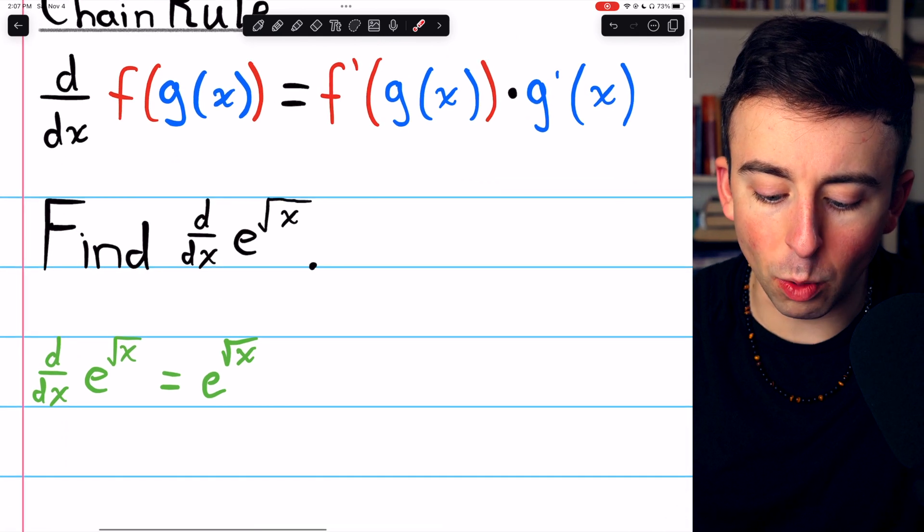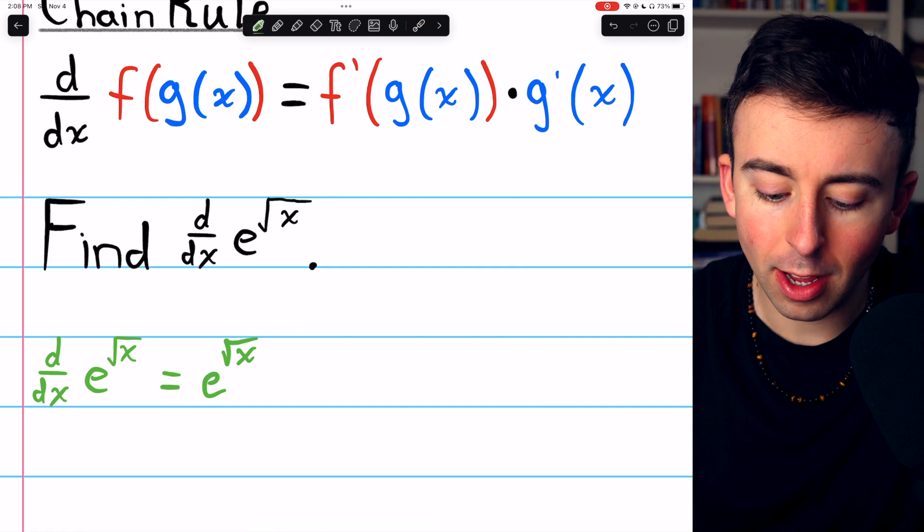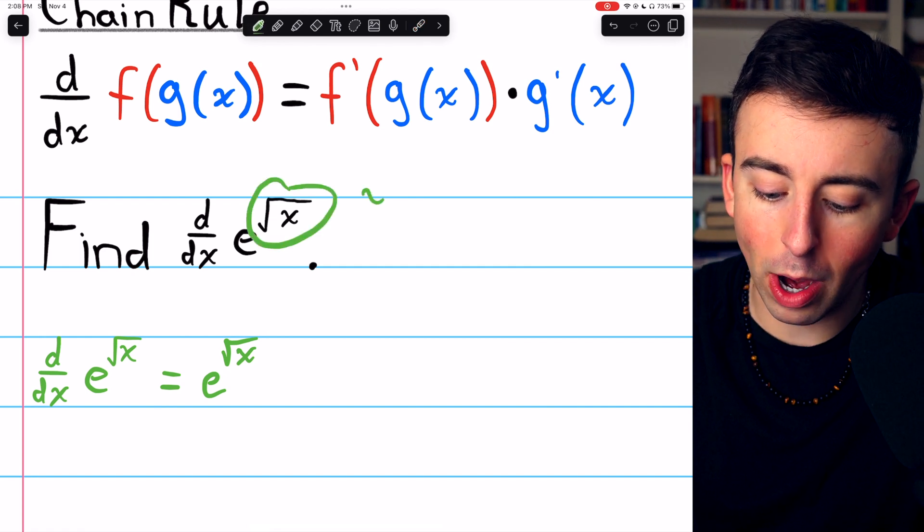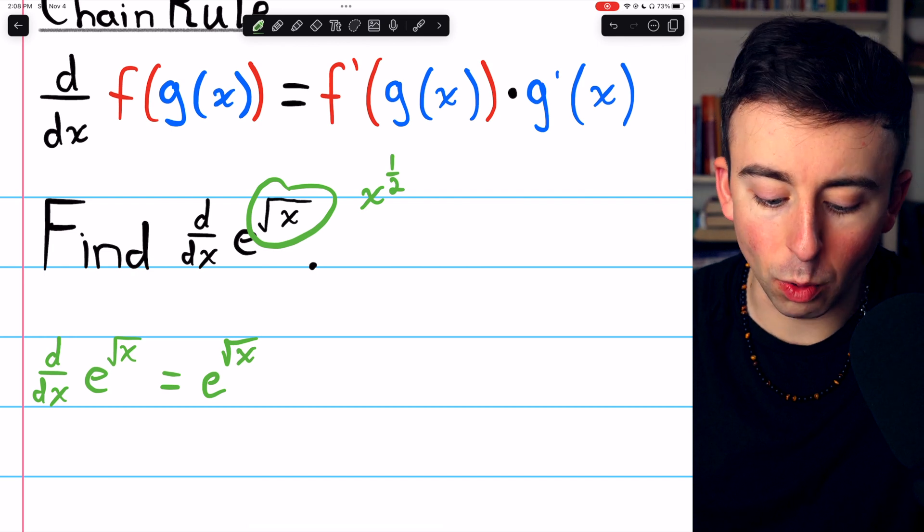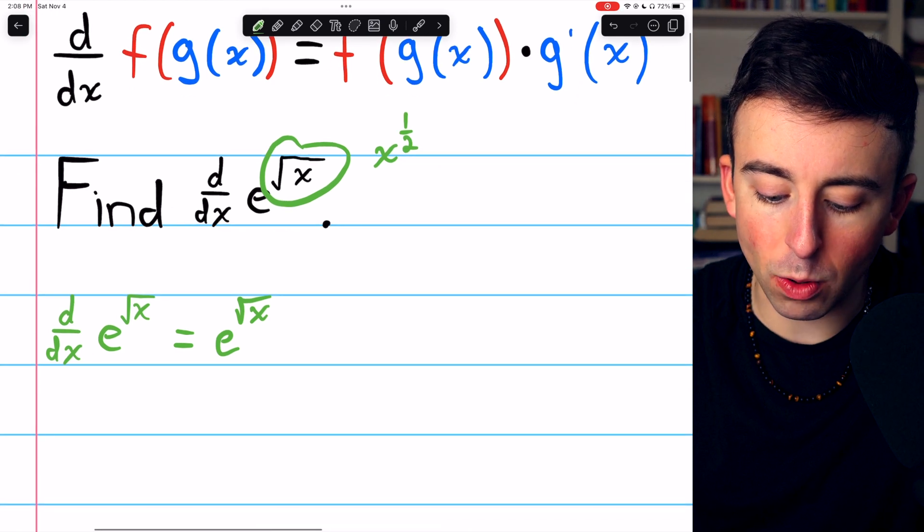In this case, that's the derivative of the square root of x. Hopefully you remember that the square root of x is the same thing as x to the one-half, so to take the derivative of that, we simply use the power rule.